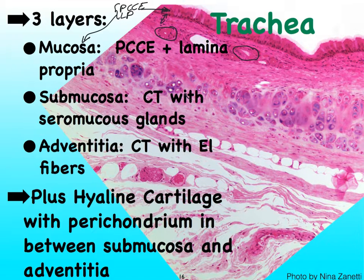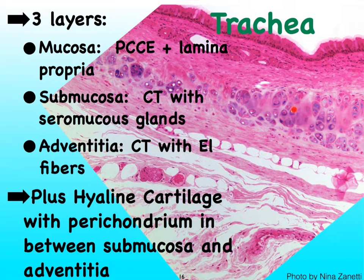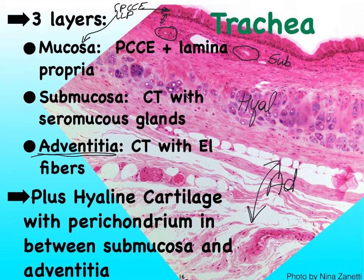And then we have an outer layer of what we refer to as the adventitia, which in this slide is mostly this portion. So what we find in between our submucosa and the adventitia is quite a bit of cartilage right here. That cartilage is surrounded by perichondrium, which is dense regular to dense irregular connective tissue. So right here we have our hyaline cartilage.